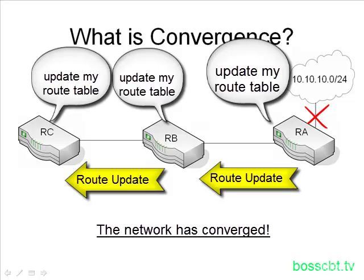We generally want a quick convergence. Quick is better — it's always more desirable than a slow convergence, because when a failure happens, you want everyone to know about it as soon as possible and update their routing tables. We want the same route table information all over the place, and a quick convergence simply means less downtime.